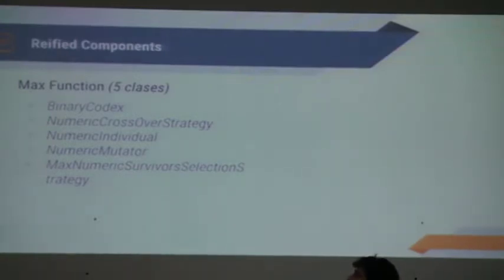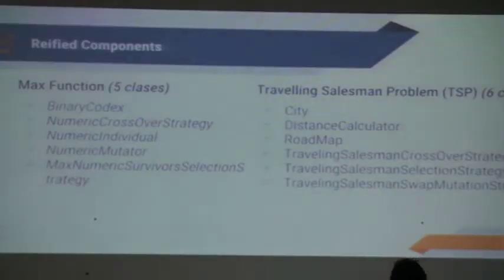Using Evelyn, these two examples are implemented just using five custom classes. And for the other example, the TSP, just use six classes. These classes have a few lines of code. The distance calculator maybe has a little more, but it's a specific class of the domain.